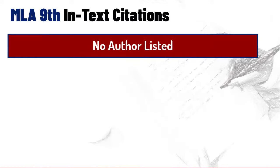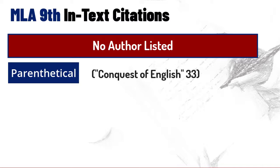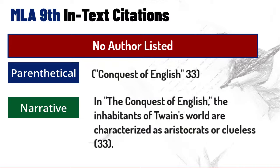When you have no author listed, you use the title of the source while maintaining its punctuation from the works cited page. Here we have the title of the source: Conquest of English. And that is an article title, so it's in quote marks. Then you repeat that in the narrative citation, except it is not inside the parentheses.